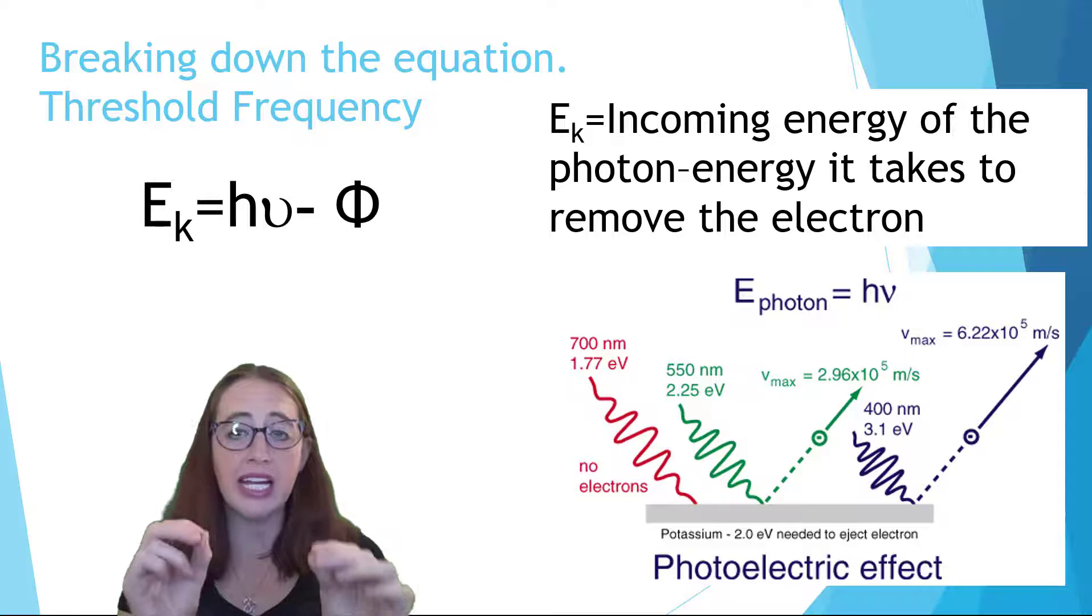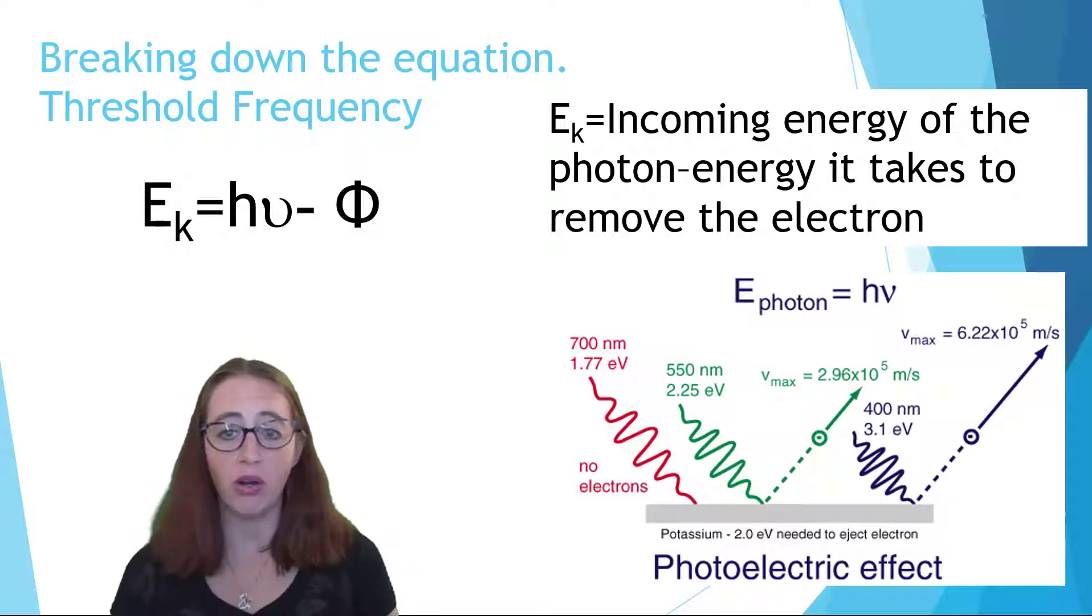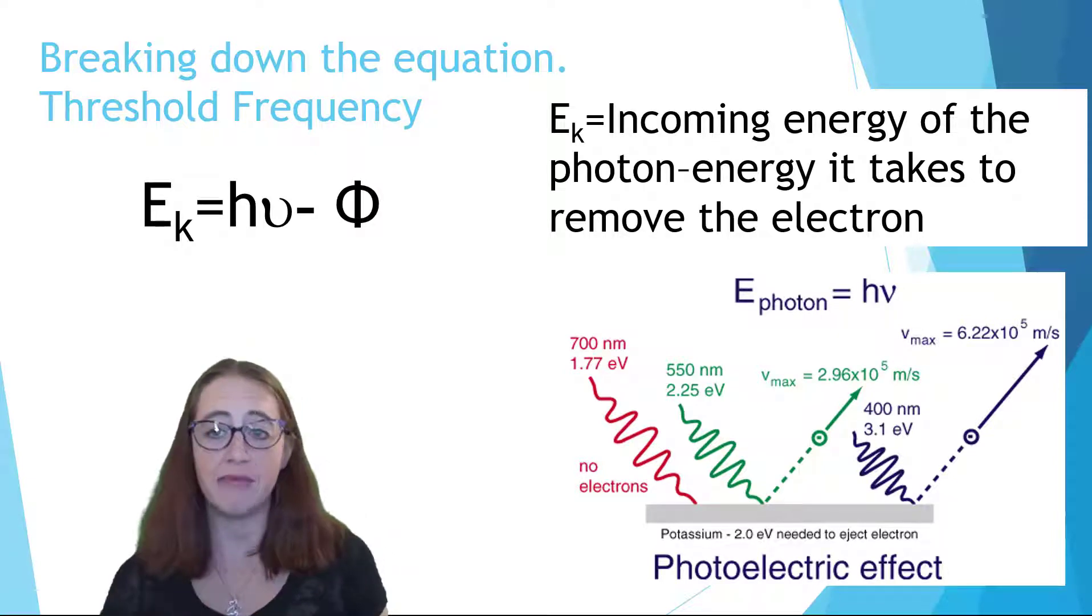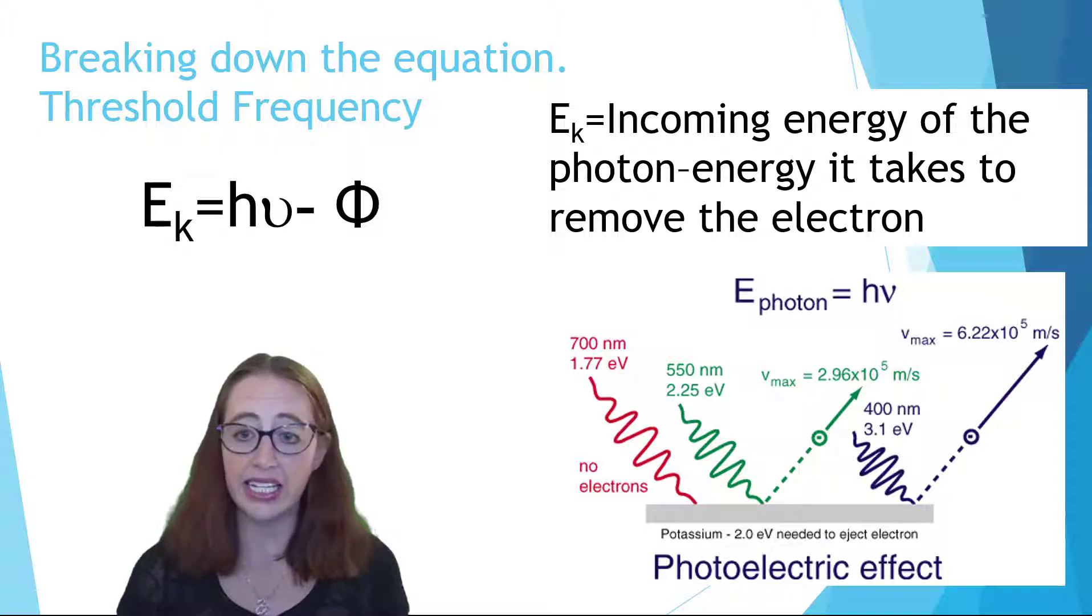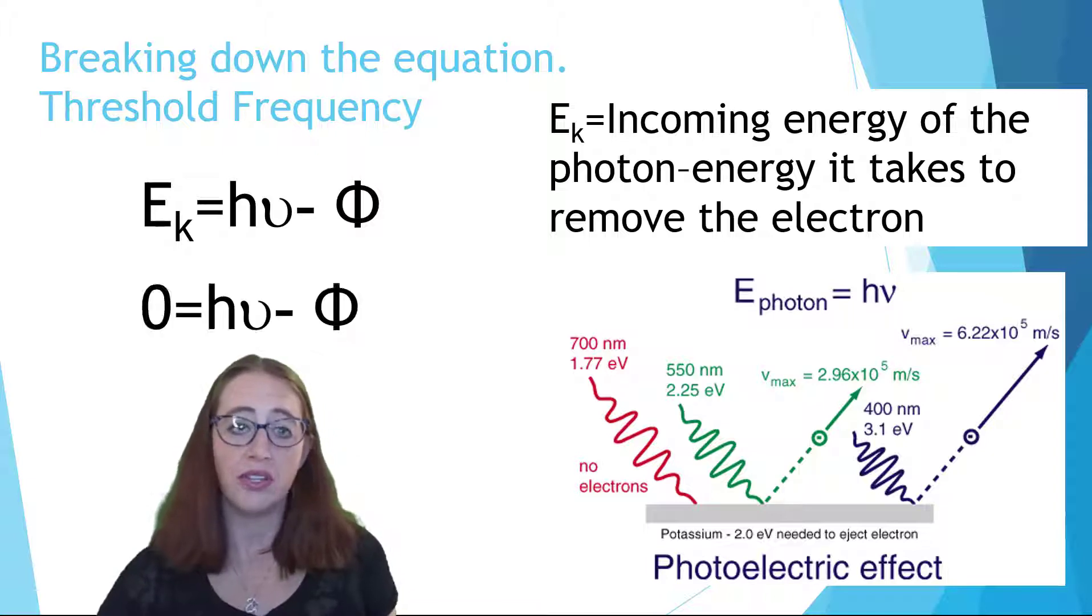If we are right at the threshold, where the only energy given is the amount needed to release the electron and no more, that means that there is no extra energy to go into the kinetic energy. And so the kinetic energy would equal zero.